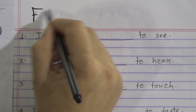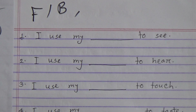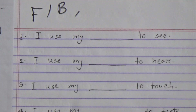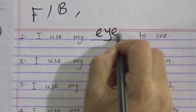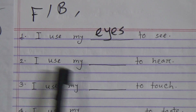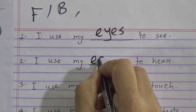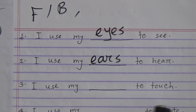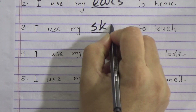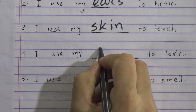Now go to the next page — this is the exercise: Fill in the Blanks. We will solve these now. Number one: 'I use my ___ to see.' The correct answer is eyes — I use my eyes to see. Number two: 'I use my ___ to hear.' The answer is ears — I use my ears to hear. Number three: 'I use my ___ to touch.' The answer is skin — I use my skin to touch.